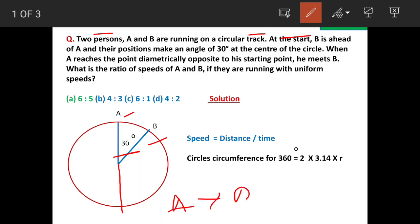A is meeting B here. So what is the ratio of the speeds of A and B if they are running at uniform speed? The answer is option A. We will see the solution now. Speed, we know, is equal to distance upon time.